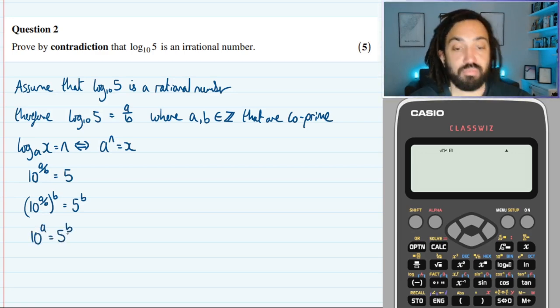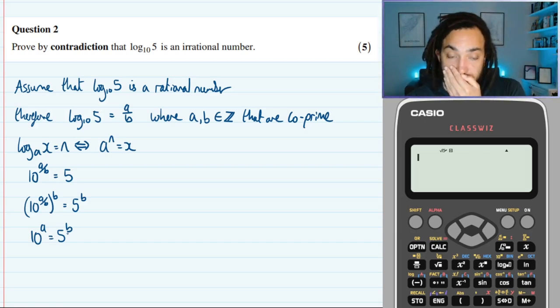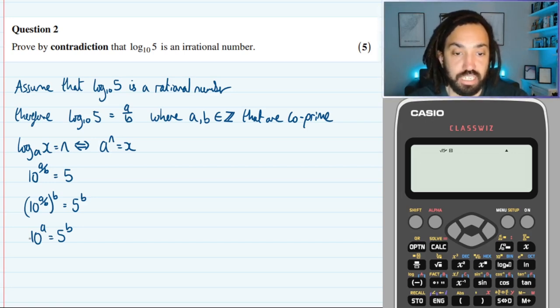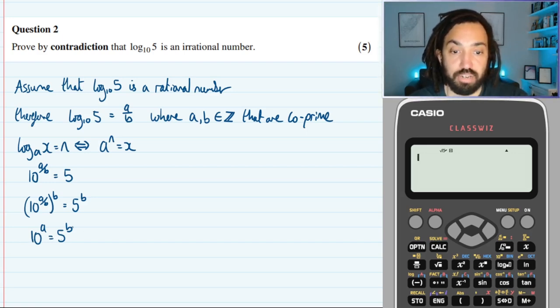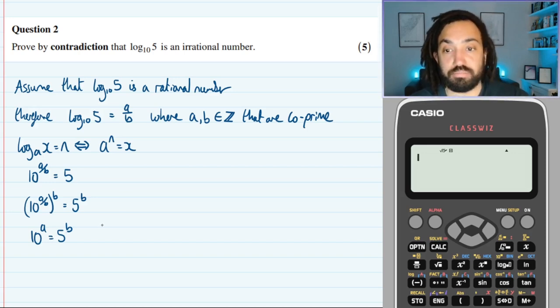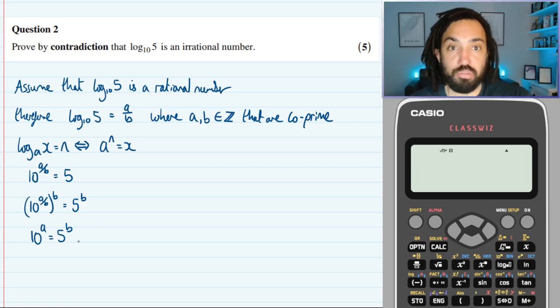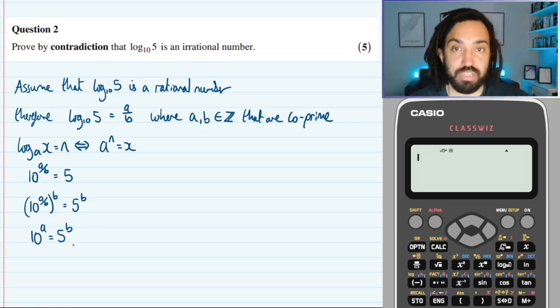And now, because a and b are whole numbers, it means that the left-hand side is a power of 10. It could be 10 to the 2, it could be 10 to the 6, it could be a million. And the right-hand side is a power of 5, so it could be 5, 25, 125. But the point is is that no power of 5 is the same as a power of 10.